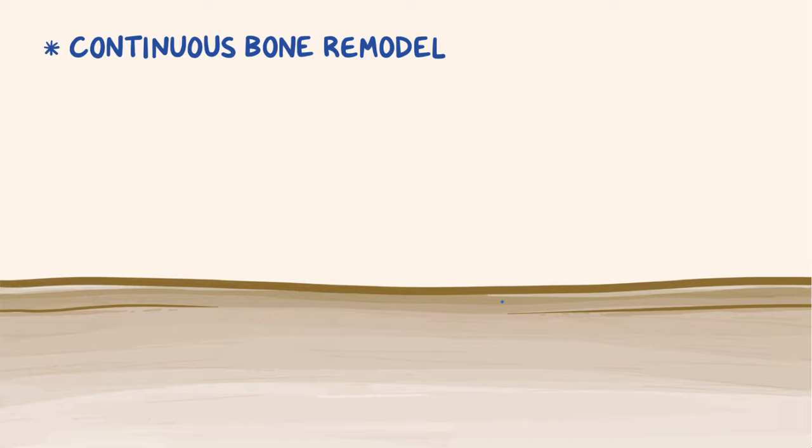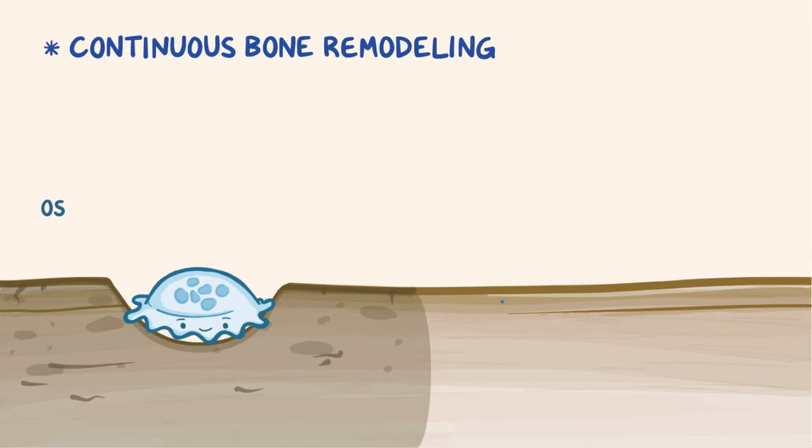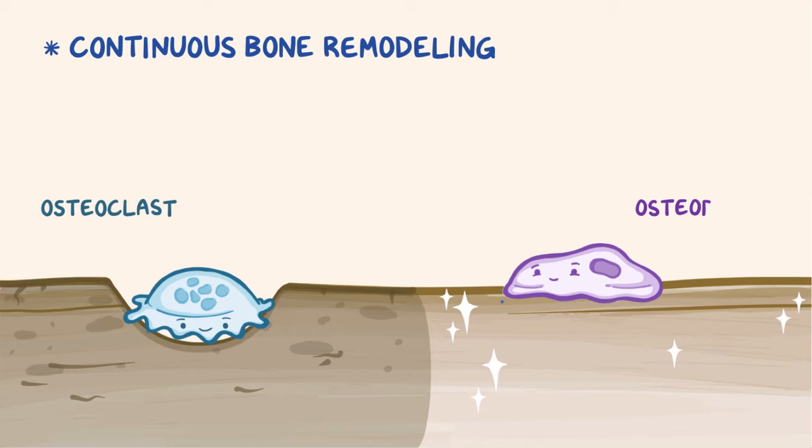Normally, bones undergo a continuous process of remodeling. Old brittle bone tissue gets reabsorbed by multinucleated bone cells called osteoclasts, which have 5-20 nuclei per cell. The resorbed bone tissue gets replaced by a new one made by another type of bone cell called an osteoblast.